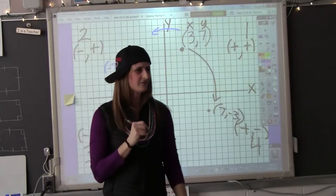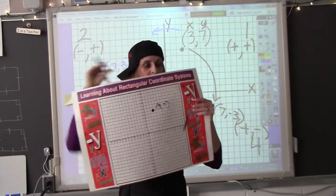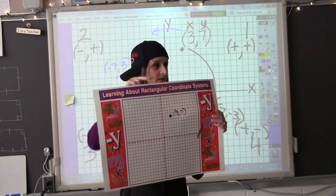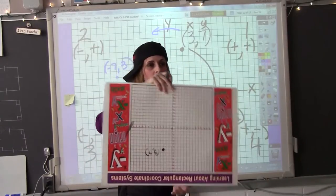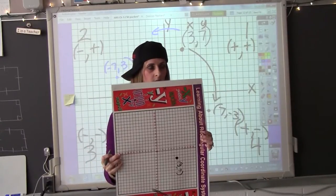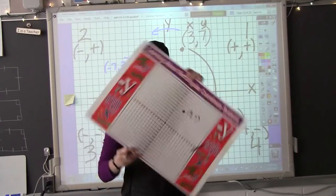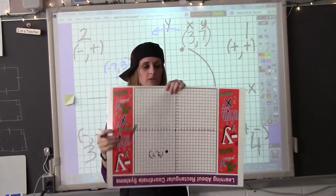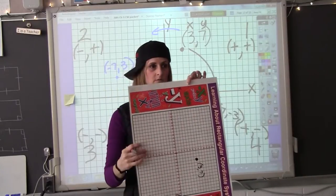And the only thing different about 270 is you're going the other way. 270 is three 90s. So 90 degrees clockwise is the same thing as 270 counterclockwise. 1, 2, 3. Are we good?